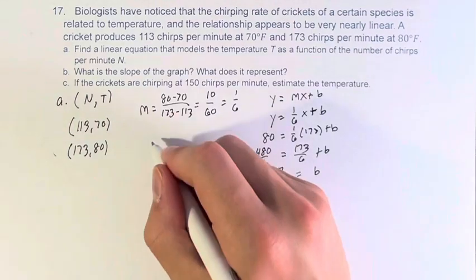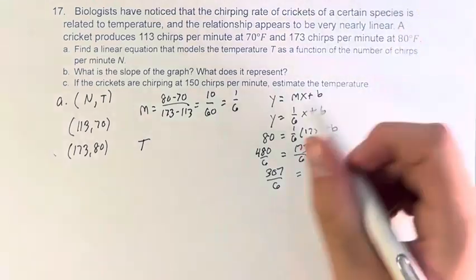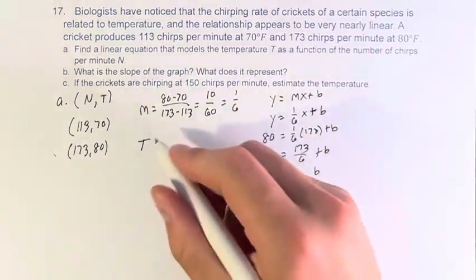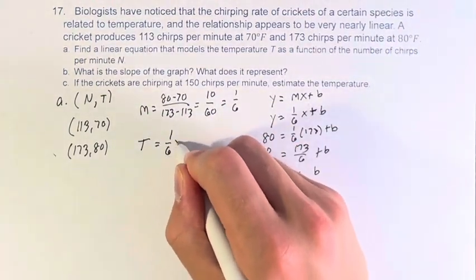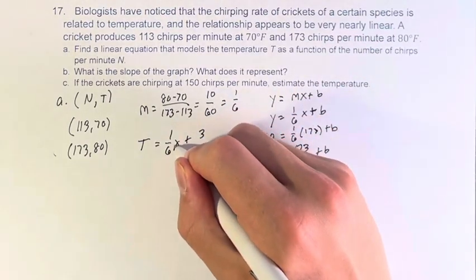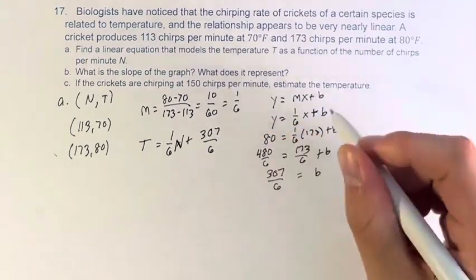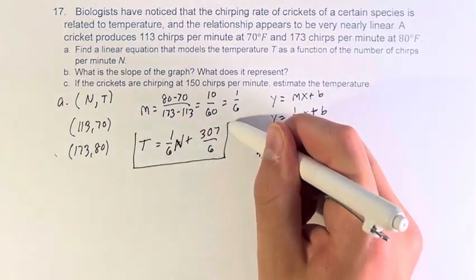Therefore our function is T equals 1/6 N plus 307 over 6. This is our function.